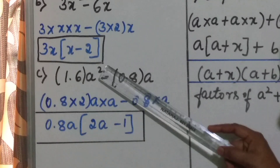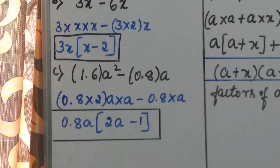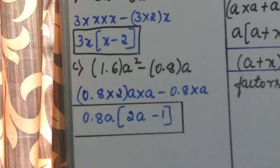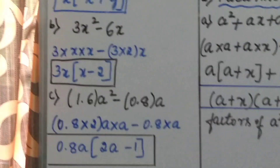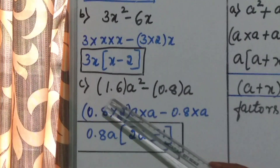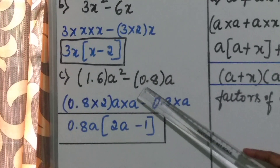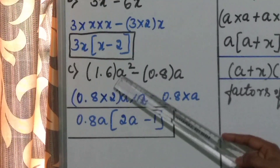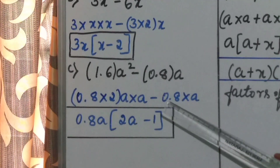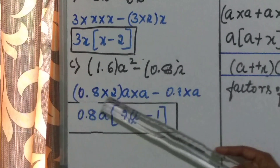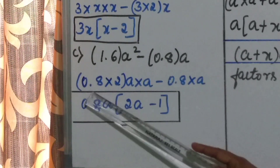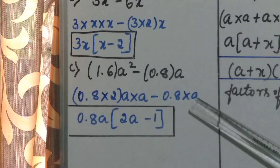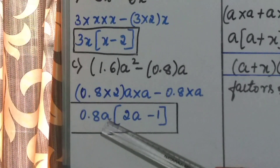Next third question: 1.6 a square minus 0.8 into a. You already know the 8 times table — 8 twos are 16, but here 1.6 is there and 0.8 is there. 1.6 is obtained by multiplying 0.8 by 2 times, so 0.8 into 2. Write a square as a into a, giving us 0.8 into 2 into a into a minus 0.8 into a. Observe carefully — the constant 0.8 and the variable a are common in both terms. Therefore 0.8 into a is a common factor.